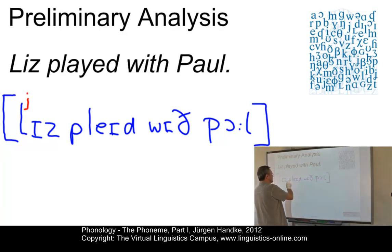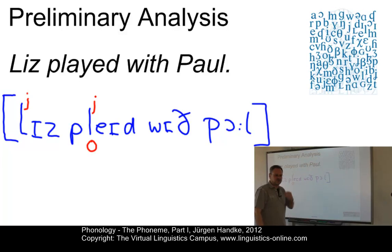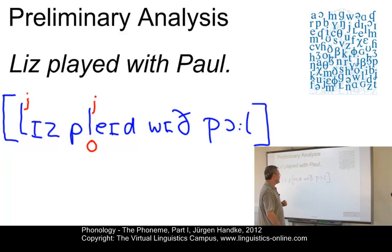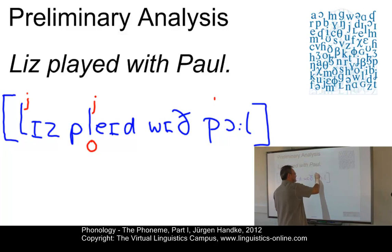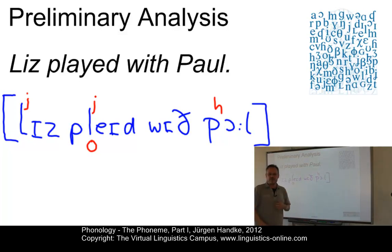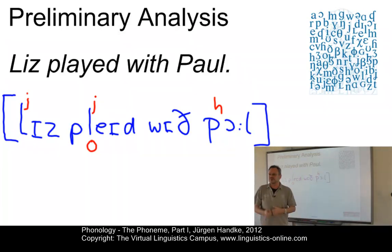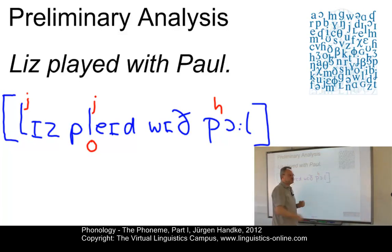Then the L in 'played' — the alveolar lateral in 'played' — is also palatalized, but at the same time it is slightly devoiced. So if you pronounce that very carefully, it is 'played.' Here we also have a typical example of a plosive with full aspiration. So we don't say 'Paul' but 'Paul.' This little puff of air that accompanies a voiceless plosive at the beginning of a word in English can be marked by the superscript H, which stands for aspiration.